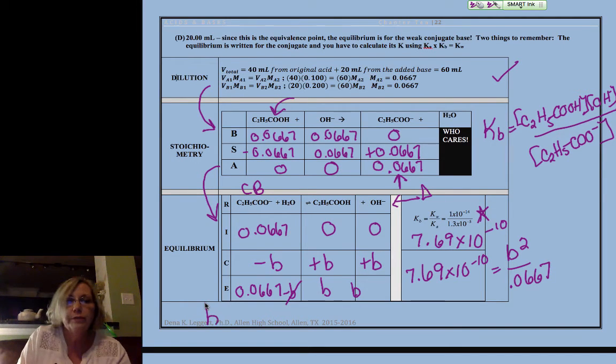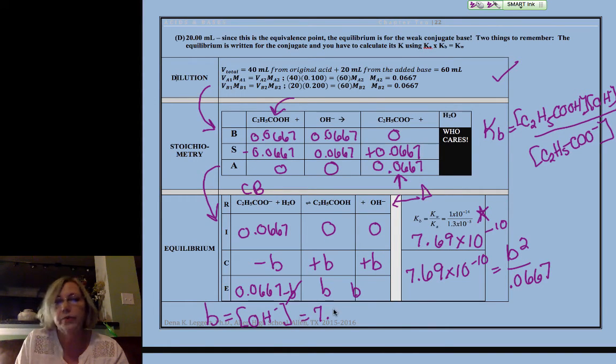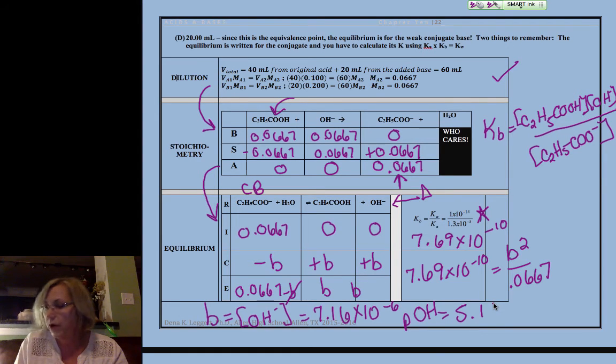This time I get B squared over 0.0667. Now, B, remember, is my hydroxide, two steps to pH. So if I calculated this right, I have 7.16 times 10 to the minus 6. My pOH, since that's a minus 6, is equal to 5 point something. That's actually 5.145. My pH, you can get very readily 8.855.